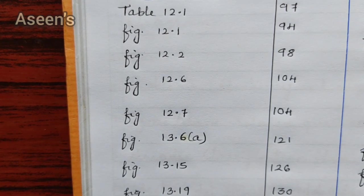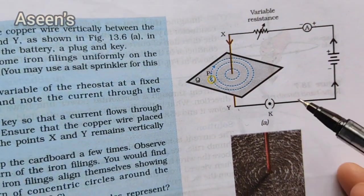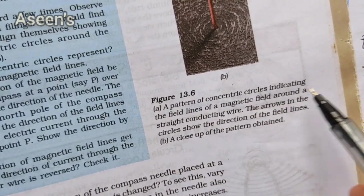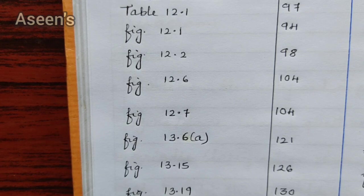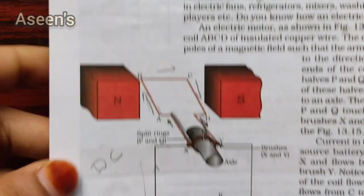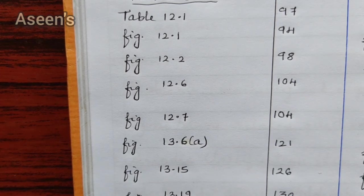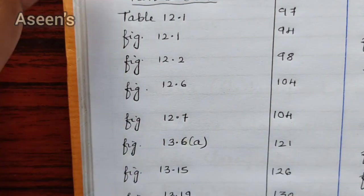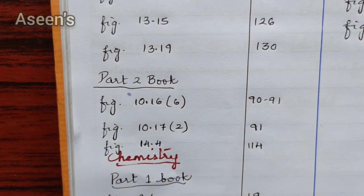Figure 13.6a is next — an important note here is that you need to remember the names of the components, as there are lengthy names involved, so make sure you can identify them. The next one is on page number 126, which is your electric generator. That covers all physics diagrams from Part 1 book.